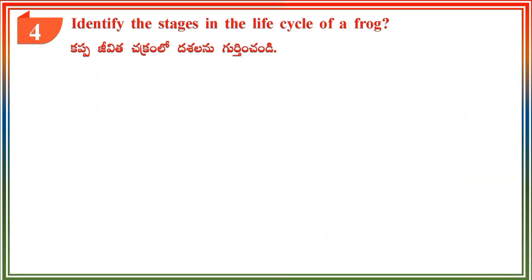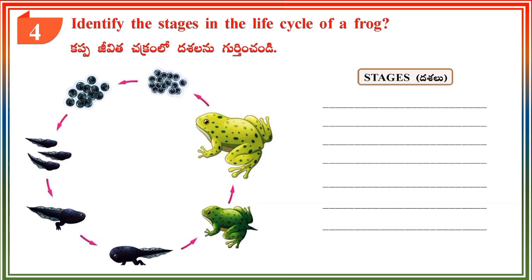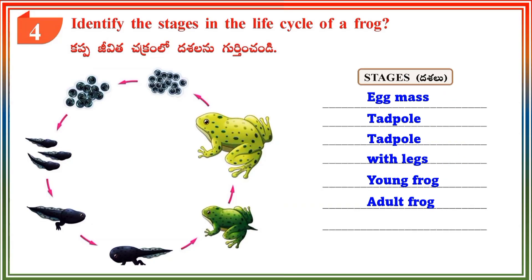Section 4: Identify the stages in the life cycle of a frog. Answer: Stages in the life cycle of a frog are Egg mass, Tadpole, Tadpole with legs, Young frog, Adult frog.